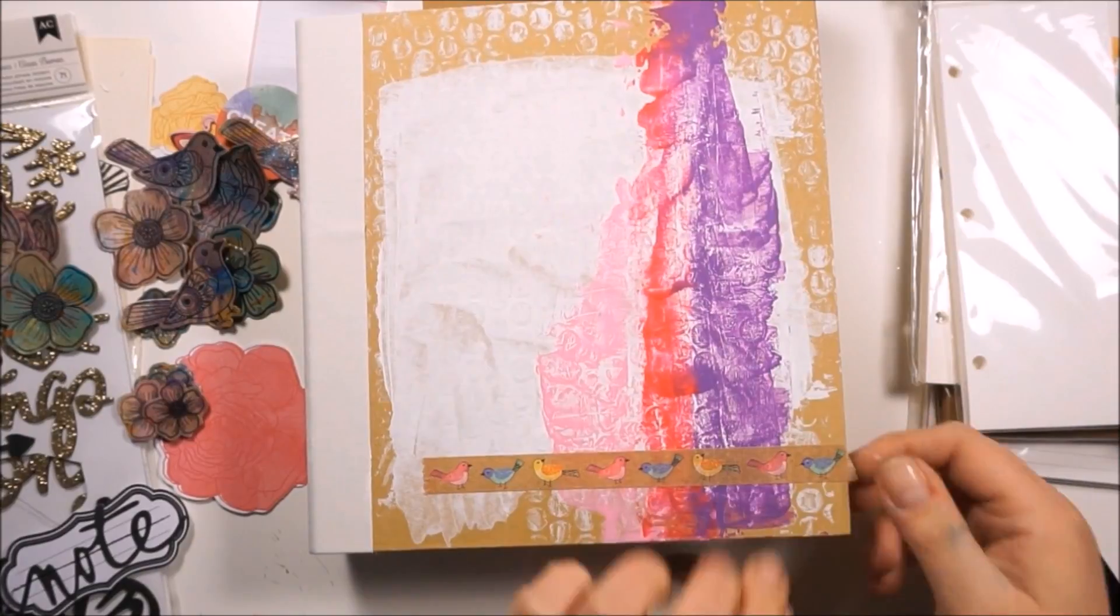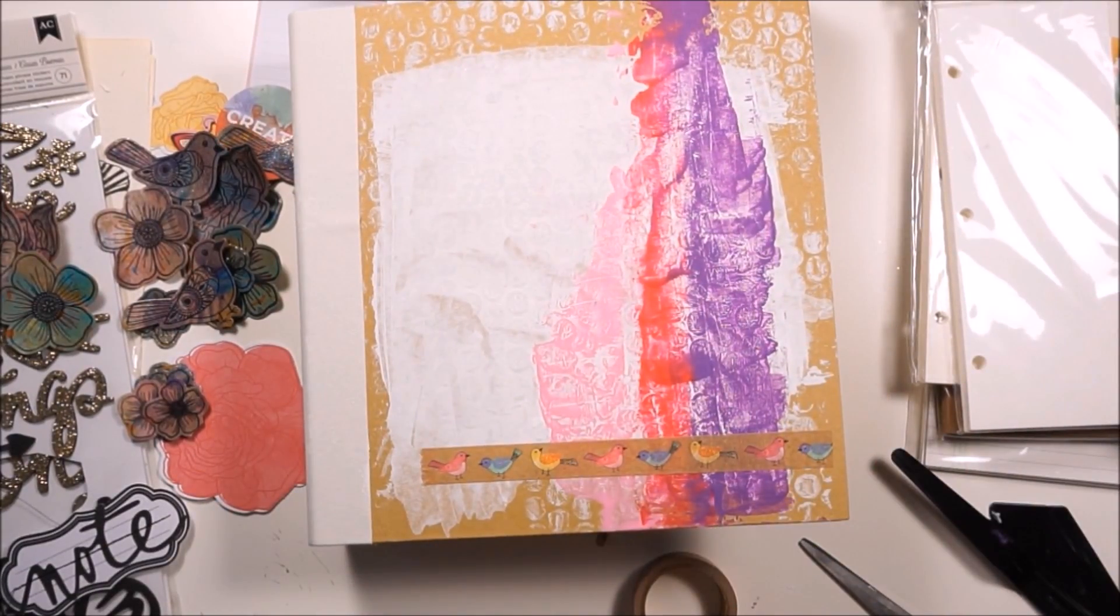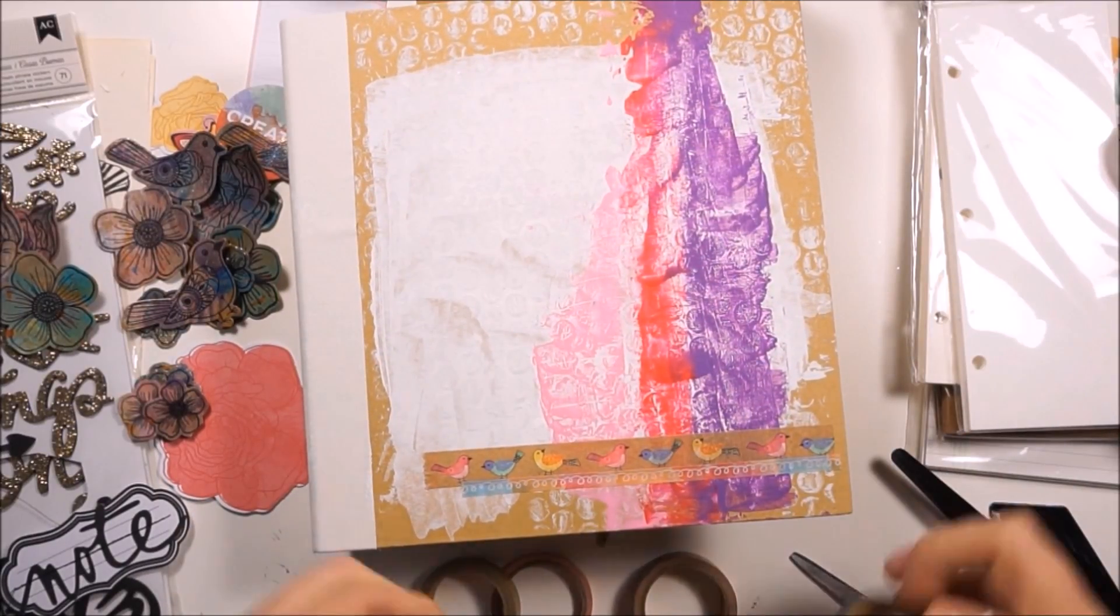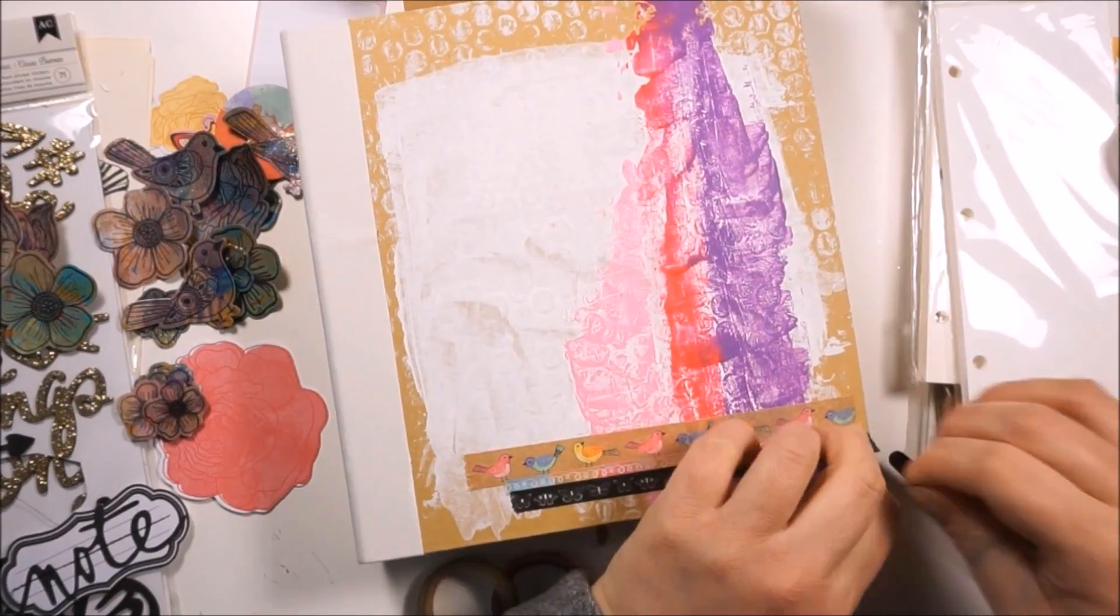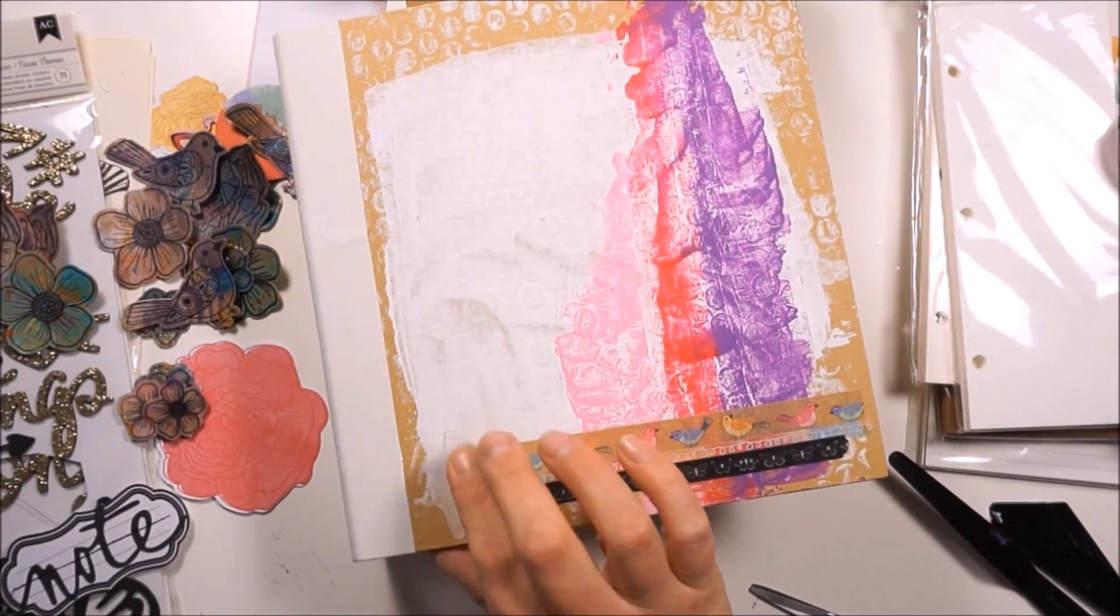The color is still wet so I'm just thinking about what I can add. Here I decided to go with some washi tapes. These are also from the all the good things collection. I'm grabbing three different colors and sizes.